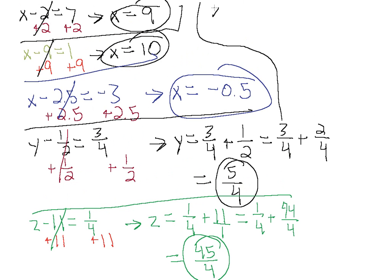Let's say we have x minus 5 equals 0. We want x all by itself, so we're going to add 5 to get rid of this minus 5. We have to do the same on the other side. This cancels, leaving just x on the left side and 0 plus 5 on the right side. So x equals 5.